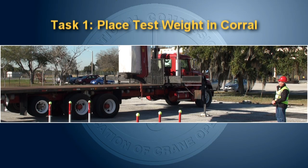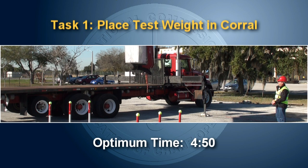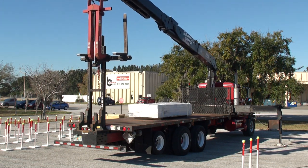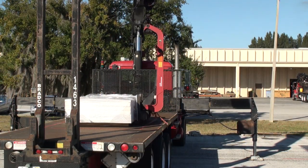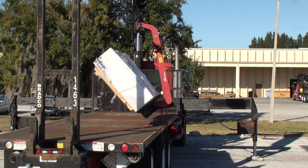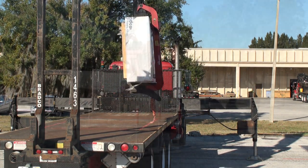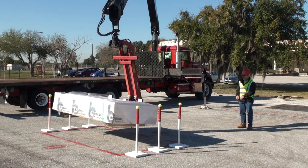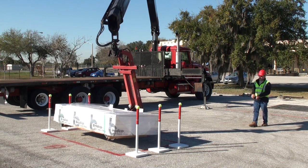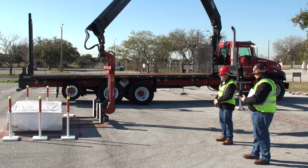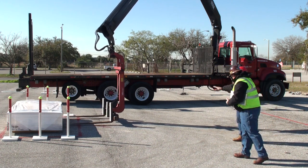Task 1: Place test weight in corral. Optimum time: 4 minutes 50 seconds. At the examiner's indication to start, at which point timing will begin, lift the fork out of the fork boom rest and pick the test weight up from designated area 1. Fully close the fork assembly and place the test weight inside designated area 2 with the fork body on the near side marked A. Then remove the fork tines from the test weight. Timing will end once the test weight has been placed fully inside the designated area, the fork tines have been removed from the test weight, and you receive the stop signal from the examiner.